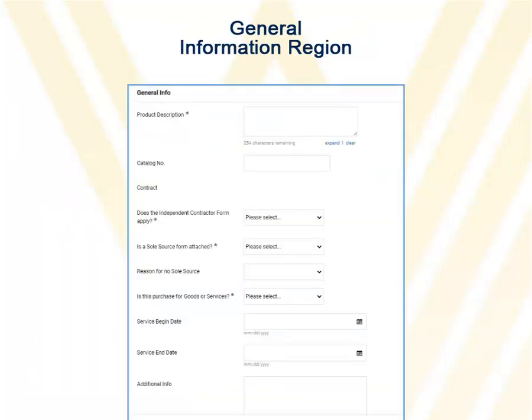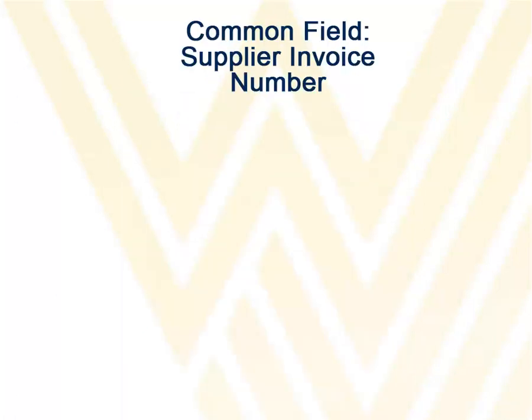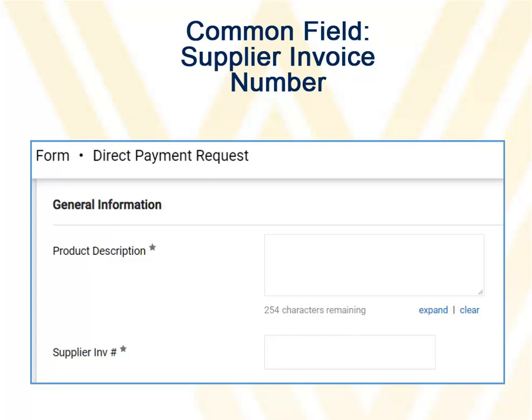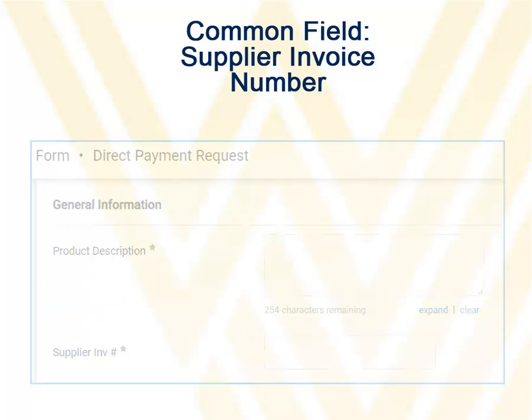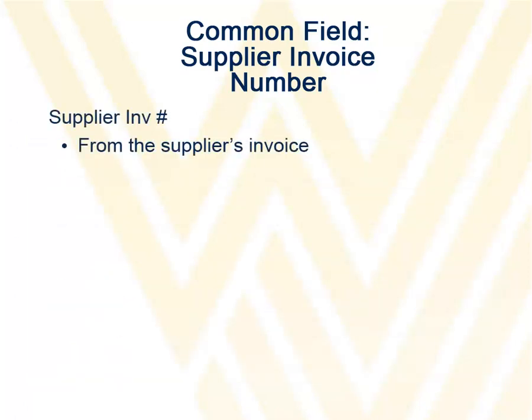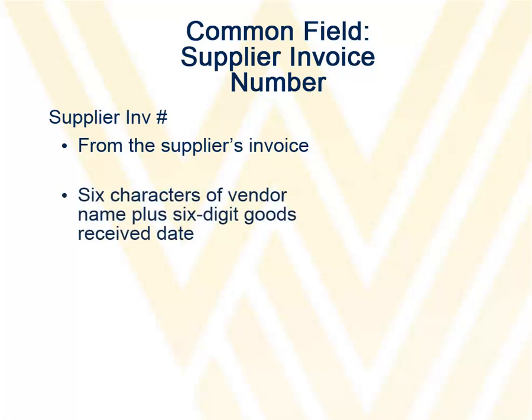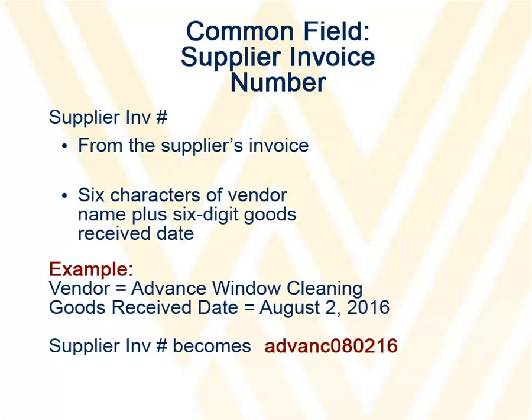After completing the supplier field, you will see a general information section. Required fields are marked with a star. The specific fields will vary depending on the form. For the supplier invoice number field, enter the invoice number that appears on the supplier invoice. If the invoice does not contain a number, enter up to 6 characters from the vendor name plus 6 digits from the goods received date.